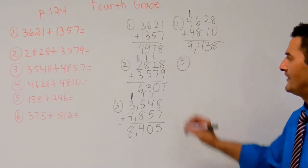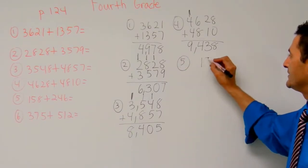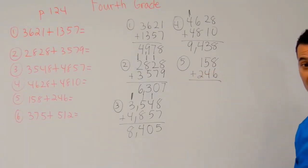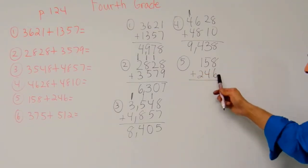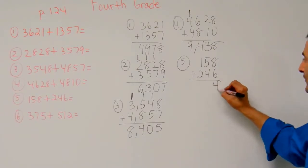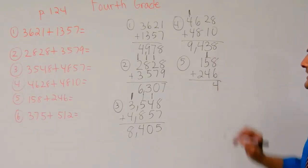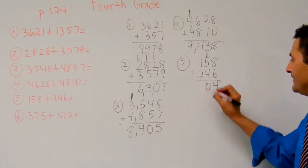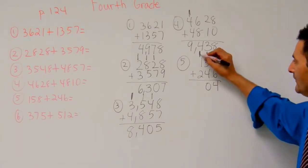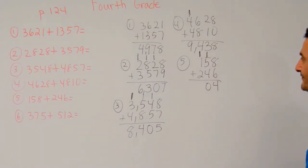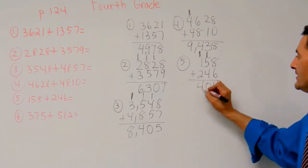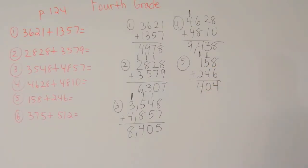Now let's take a look at number 5. Number 5 is 158 plus 246. Let's go ahead and start with the 1's place: 8 plus 6, that's 14. I'm going to keep 4 of those 1's and move that 10 over here. 5 plus 4 is 9, plus 1 more is 10. I've got 10 10's, that's 100. I'm going to keep 0 10's and move all of those 10 10's to the 100's place. Now 2 plus 1 is 3, plus 1 more is 4, that's 400. The answer is 404.